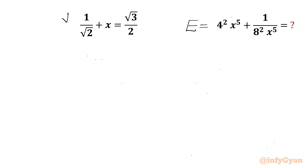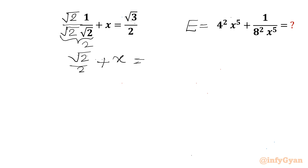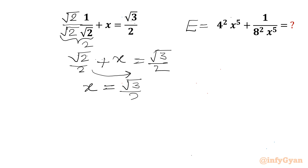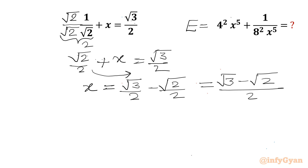Let's get started by considering rationalization for the term 1 over √2. I will multiply numerator and denominator by √2, so the denominator will be 2. So I can write √2 over 2 plus x equal to √3 over 2. Now I will take this term to the RHS, so x will become √3 over 2 minus √2 over 2, or we can write (√3 − √2) over 2. This is the value of x.